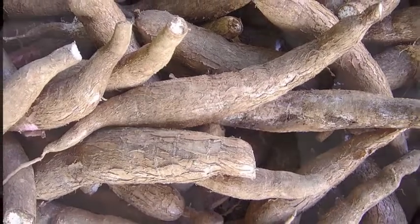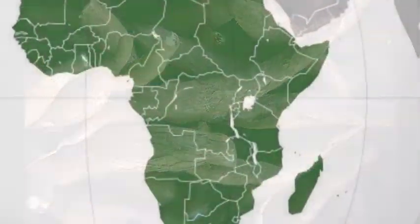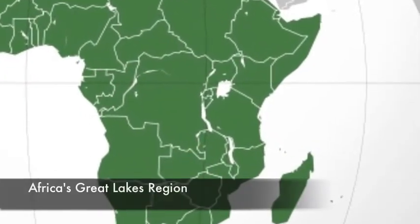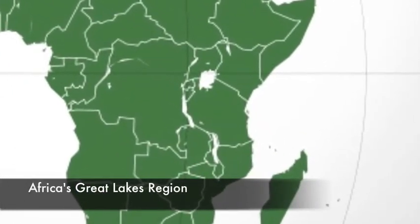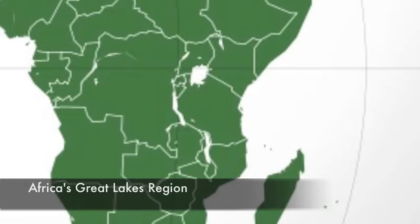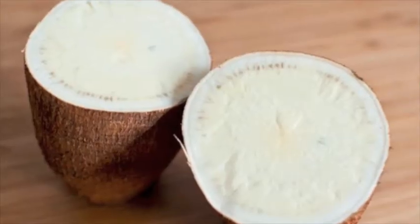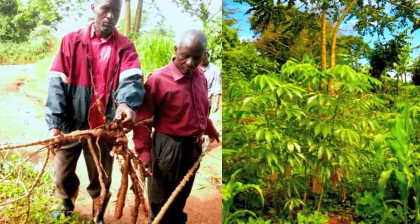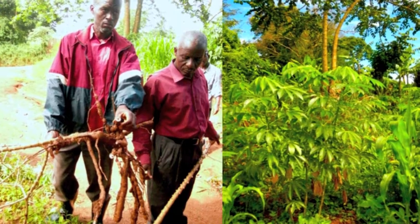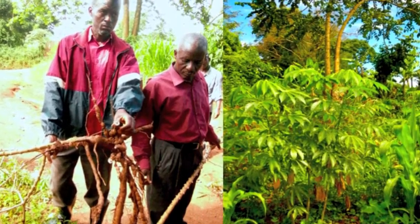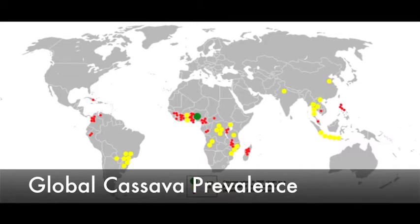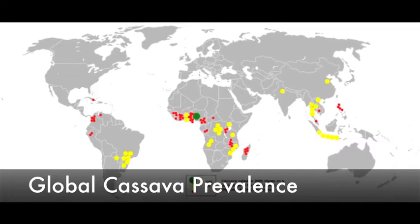Sadly, Monica's case is not an exception. Rather, her story has been repeated countless times throughout Africa's Great Lakes region. The destruction of this vital crop has major ramifications due to the widespread popularity of the cassava plant as a staple crop for hundreds of millions of people throughout Africa, Asia, and South America.